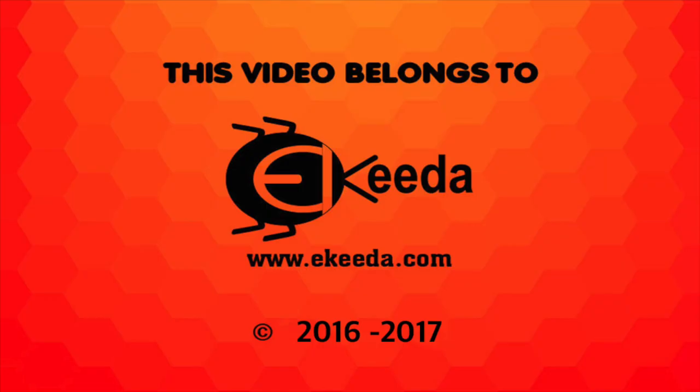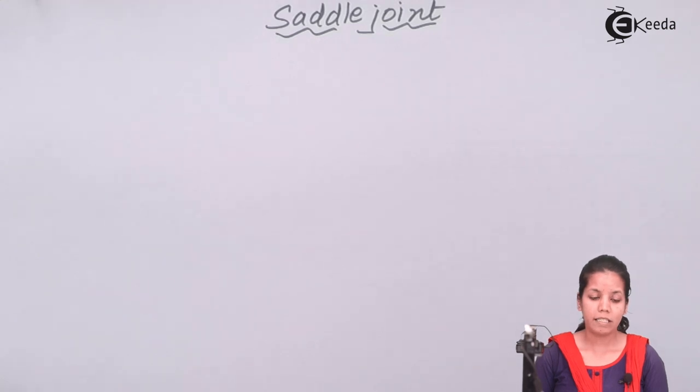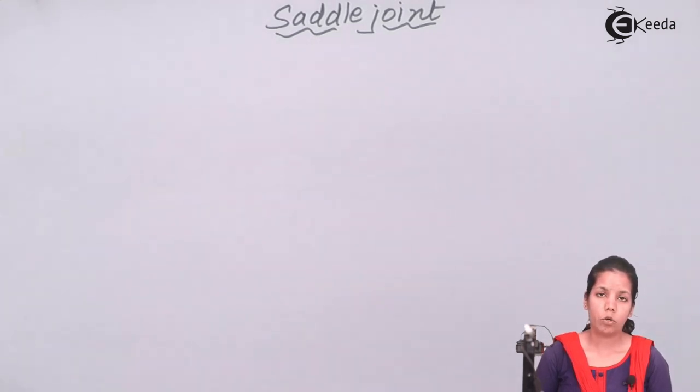Hello students, today we are studying chapter Human Skeleton, and in that we are studying the topic saddle joints. Saddle joints are the joints that are present in your thumb. Today we will be studying how saddle joints work, what their functions are, and how they move.